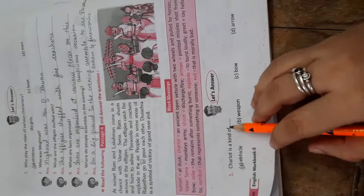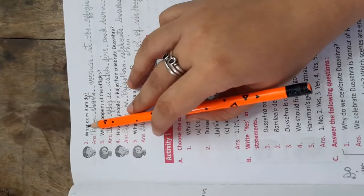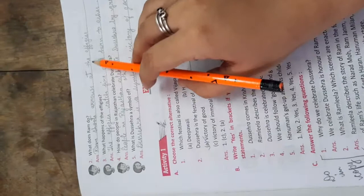Chariot is a kind of vehicle. What does Ram do? Ram shoots arrows at the effigies.